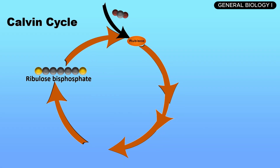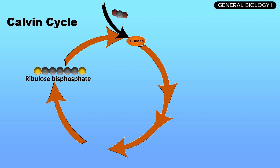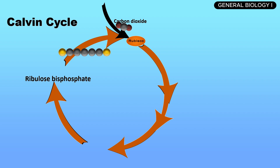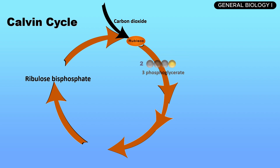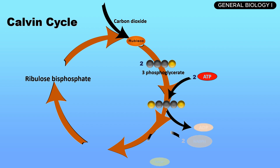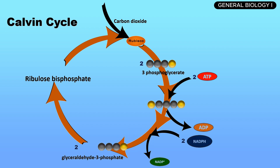The enzyme rubisco captures carbon dioxide from the atmosphere and attaches it to a 5-carbon sugar called ribulose bisphosphate, producing a 6-carbon compound that quickly splits into two molecules of 3-phosphoglycerate. The ATP and NADPH from the light-dependent reactions are then used to convert 3-phosphoglycerate into glyceraldehyde-3-phosphate, a 3-carbon sugar.